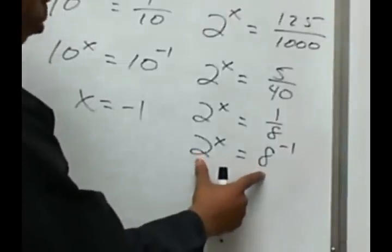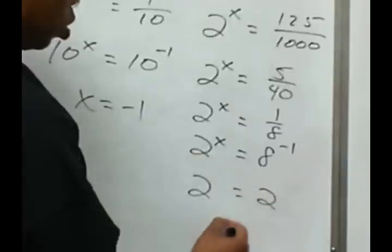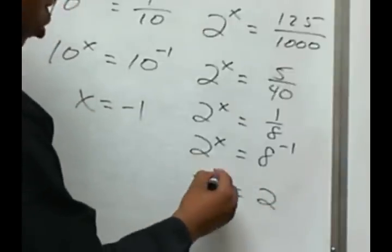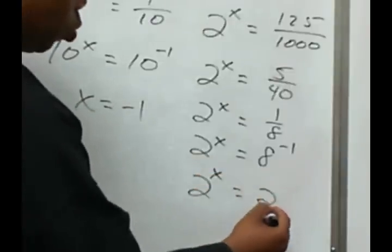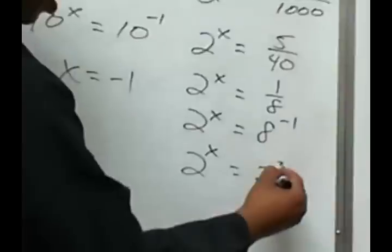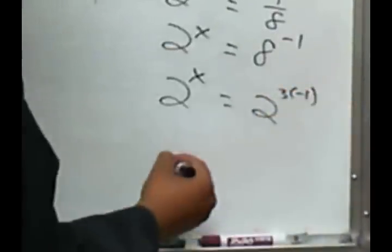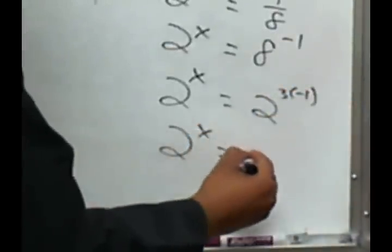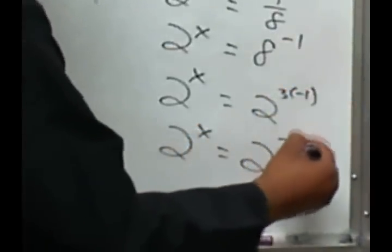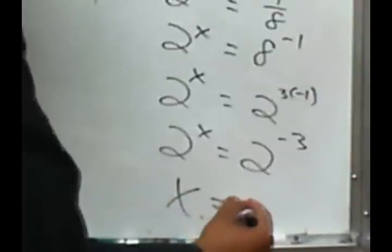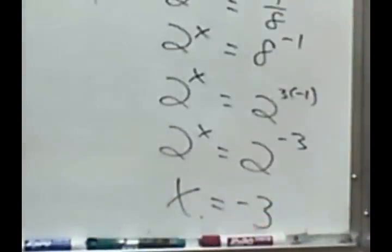Then, my common base with 2 and 8 would be 2. This will remain 2 to the x power. This will represent 8 by 2 to the third power times the negative 1. So, we have 2 to the negative 3 power. And, this implies x is negative 3.